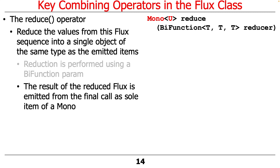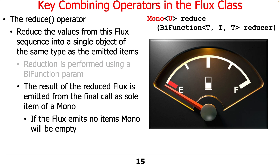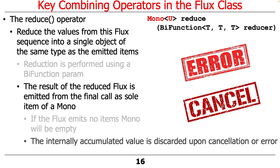The result of a flux reduction is a mono that will emit the final result. If the flux is empty, the resulting mono will also be empty. In RxJava, reduce returns a Maybe, which means it may or may not have a value. In Project Reactor, they say that's a little confusing, so they just have monos that don't have to emit anything. If an error occurs or something is canceled while accumulating values, the internally accumulated value is discarded and will not be returned.